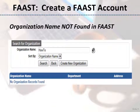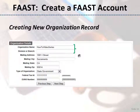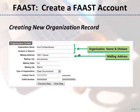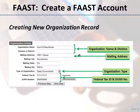If you do not find the organization's name in the database, click the Create New Organization button to enter details for the new organization. Enter the organization name, division or branch, mailing address, select an organization type, and finally enter a Federal Tax ID and a DUNS number if known. The Federal Tax ID number and the DUNS number are not required. Then click the Next Step button to start step two, user registration.